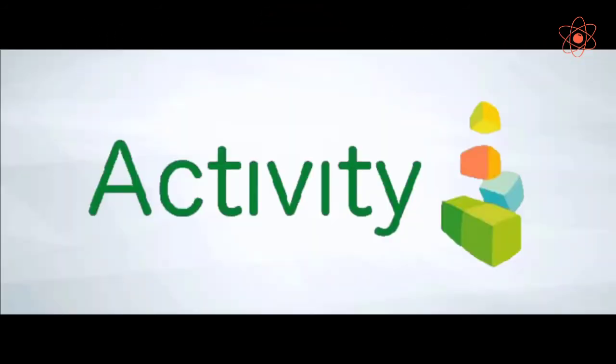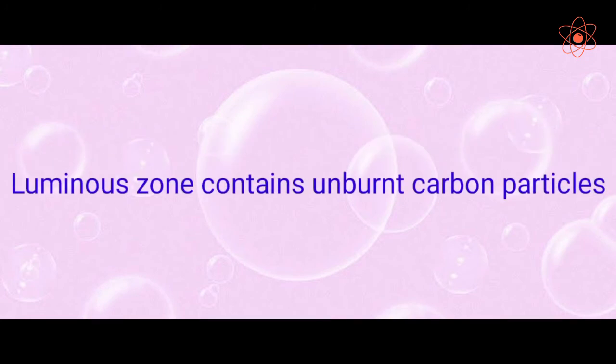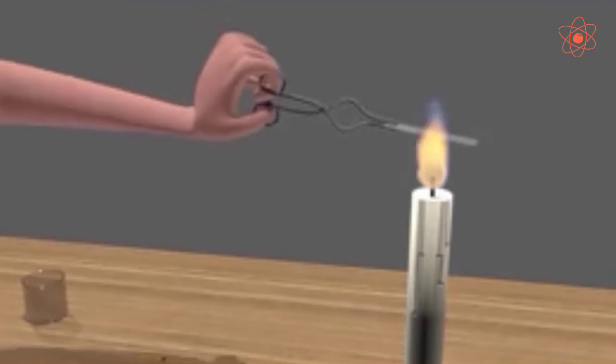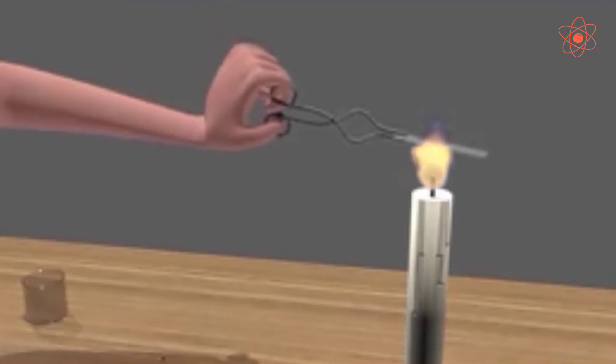Let us understand with the help of an activity that the luminous zone contains unburnt carbon particles. Light a candle and hold a clean glass slide over the yellow part, that is the luminous zone of the flame, for about 20 seconds.